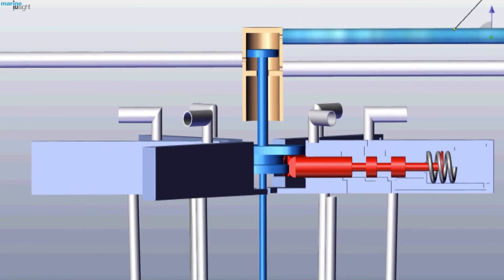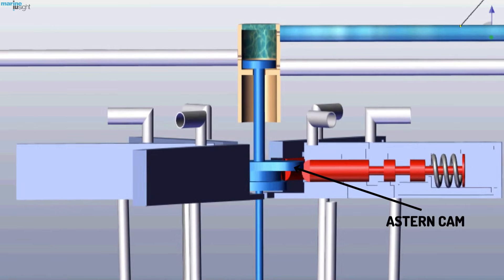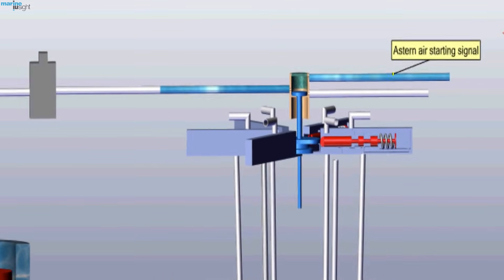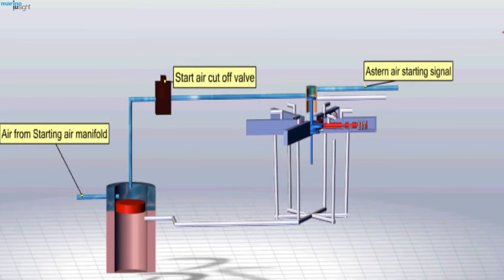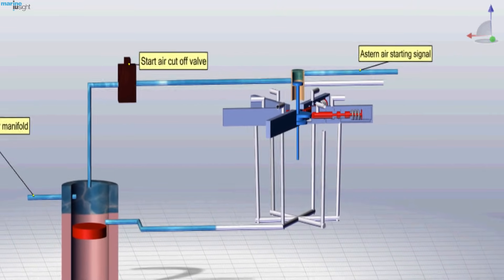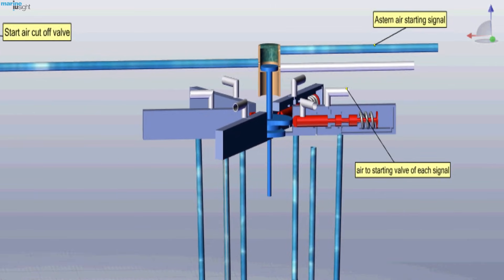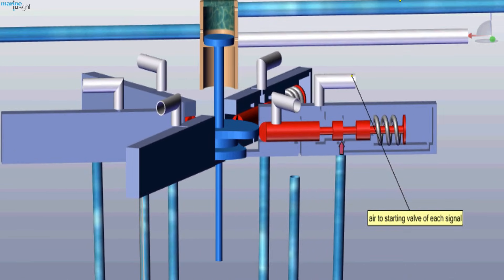When the astern command is given, the astern air signal shifts the distributor cam, and the second cam responsible for astern firing order comes into play. The astern air signal makes the air cut-off valve inactive, supplying starting air from the air manifold to the air distributor. The air from the distributor is then supplied to different cylinders as per the reverse firing order, because the astern cam operates each unit plunger in astern firing sequence as it rotates, allowing starting air to go to the combustion chamber.